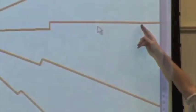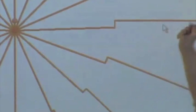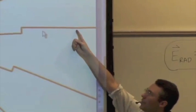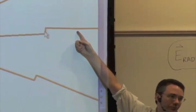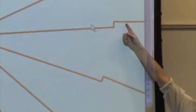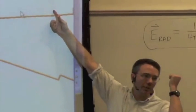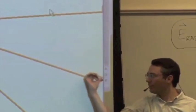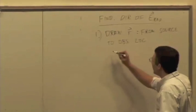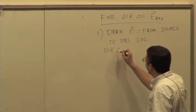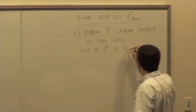Notice also, if I have an observation location here, r is pointing from the source to the observation location, so r is pointing to the right. If I let this go forward in time, the radiation is traveling in that direction — it's coming at me, moving to the right. And if I were down here, the radiation would be traveling that way. So if we know r, we also get the direction of propagation. The direction of r is the direction of propagation.